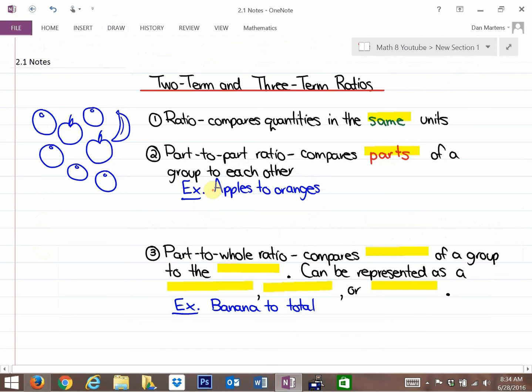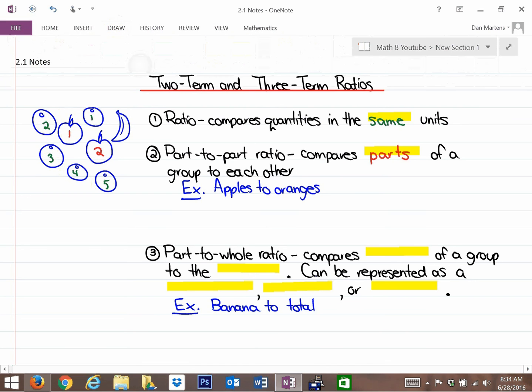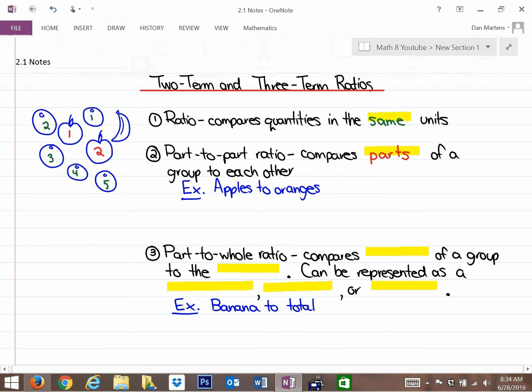So as an example, if we were to write the ratio of apples to oranges, the order is important. So the number of apples is two, and there are also five oranges as you can see here. So the ratio, if I was to draw this in ratio notation of apples to oranges, you could write this one of three ways.